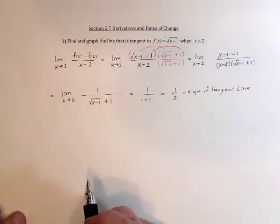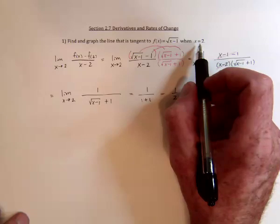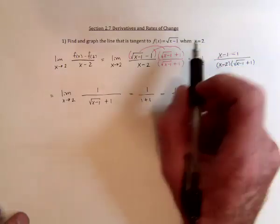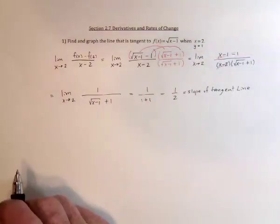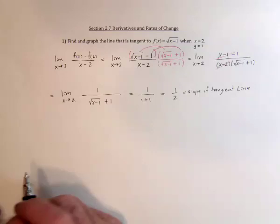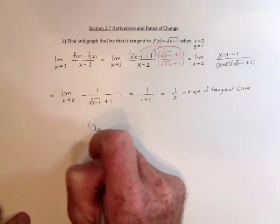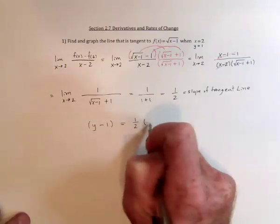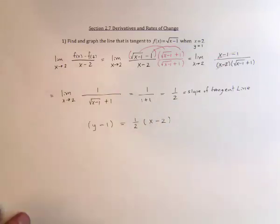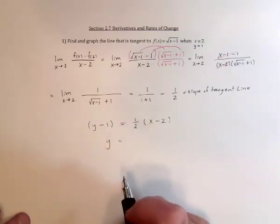We can use the point-slope formula as long as we have a point and a slope. We have the slope. We have half of the point — we just need the y value. If we substitute a 2 into the function, then y is equal to 1. Now use the point-slope formula: y minus the y value equals the slope times x minus the x value.